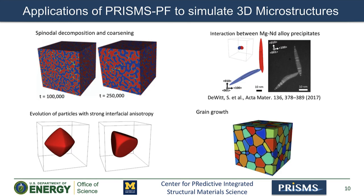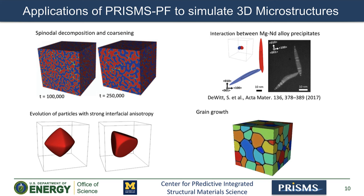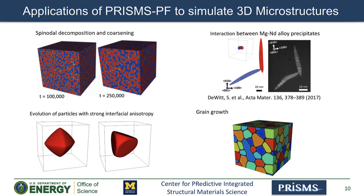I want to show a few applications that showcase the versatility of PRISMS-PF to simulate three-dimensional microstructures. Starting from spinodal decomposition and coarsening on the top left, we have interaction between magnesium and neodymium precipitates showing good agreement with experiments in terms of morphology and relative orientation. On the bottom left, we see particles featuring strong interfacial anisotropy after evolving from an initially spherical shape, with different shapes due to different anisotropy functions. At the bottom right, we see an animation of grain growth using the grain reassignment method, which allows us to describe a large number of grains with only a few order parameters.